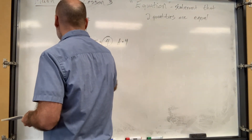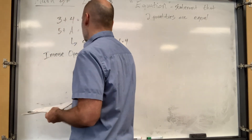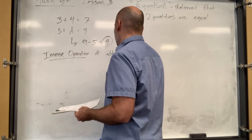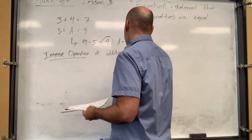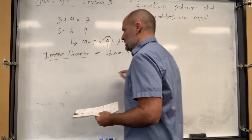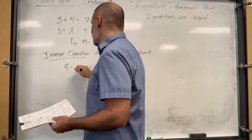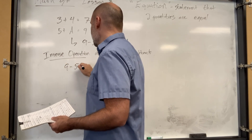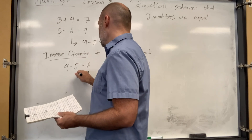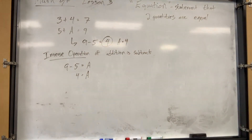The inverse operation of addition is subtraction. So we're just going to invert it — go backwards. Nine minus five equals a, so a has to be four.